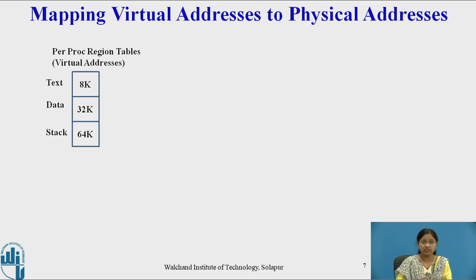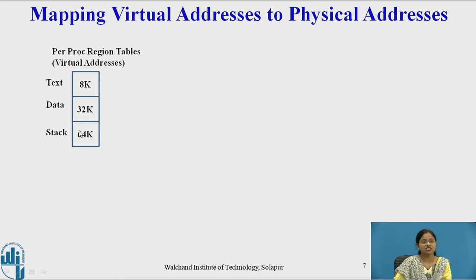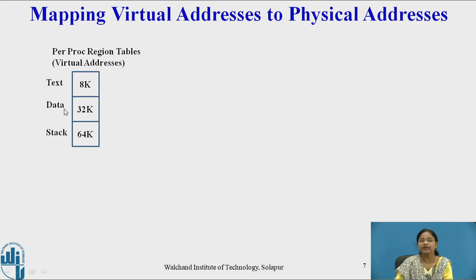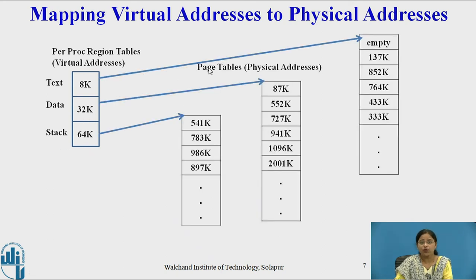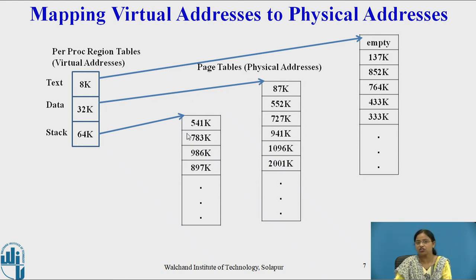Now let us see how a virtual address can be converted into a physical address. Consider a process whose per-process region table is given along with virtual addresses. As we know, a process contains three regions: text region, data region, and stack region. The text region starts at 8K, the data region starts at 32K, and the stack region starts at 64K. Corresponding page tables are also given for all three regions, along with the physical addresses.